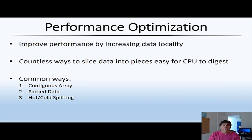So here we have an overview of how you can optimize performance. You can improve performance by increasing data locality and there are countless ways to slice data into pieces that are easy for CPUs to digest. Let me just mention three common ways: making your data contiguous, packing your data, using a technique called hot cold splitting.